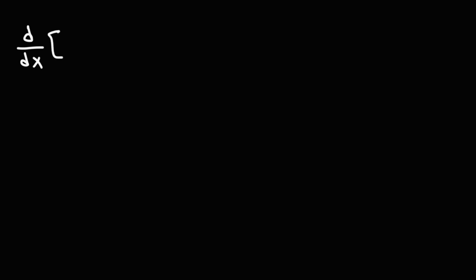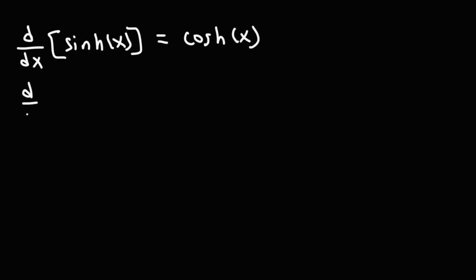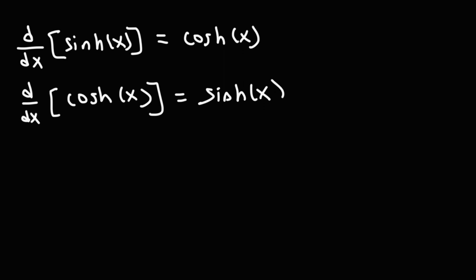In this video we're going to focus on the derivatives of hyperbolic functions. The derivative of hyperbolic sine is hyperbolic cosine. The derivative of hyperbolic cosine is hyperbolic sine — this is a bit different from the corresponding trig function. In trig, the derivative of cosine is negative sine, but for hyperbolic functions the derivative of hyperbolic cosine is positive hyperbolic sine.